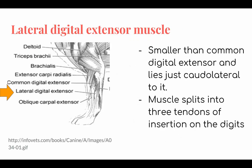Lateral digital extensor muscle. The muscle splits into three tendons of insertion on the digits. It extends from the lateral epicondyle of the humerus towards the proximal end of digits 2, 3, 4, and 5 in a cat, or digits 2, 3, and 4 in dogs. The function is to extend the digital joints.